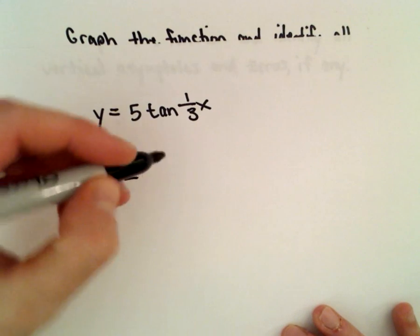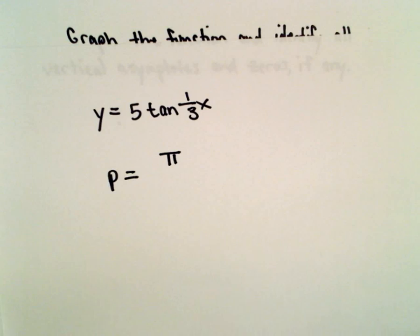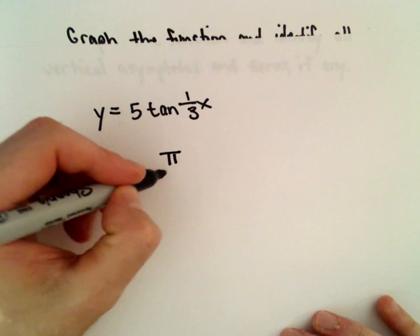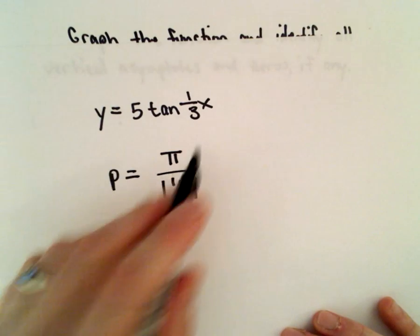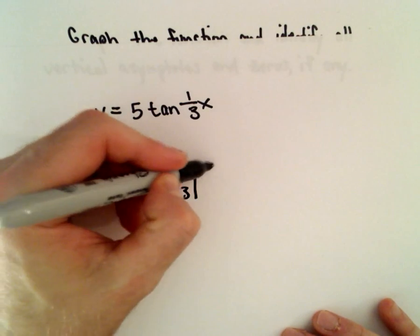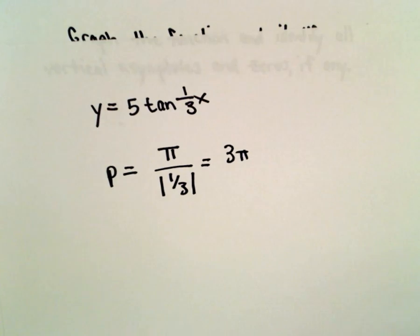So to get the period, be careful: for sine and cosine we use two pi, but tangent has a period of pi. So we take pi and divide it by the absolute value of the b value, which in this case is one-third, and that's going to give us a value of three pi.